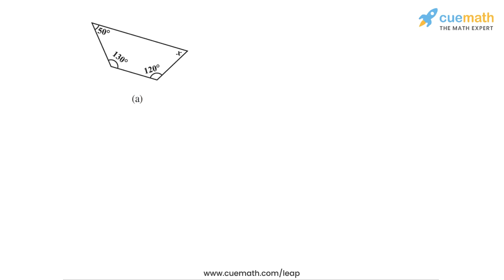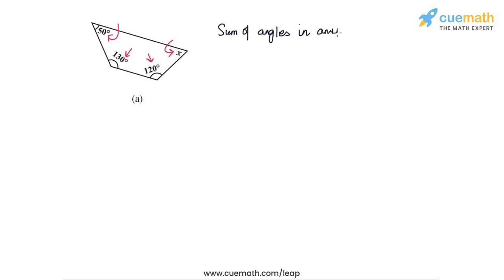Let's start with part a. In part a we have a quadrilateral in which three of the four angles are known: 50 degrees, 130 degrees, and 120 degrees, but we don't know the measure of angle x. What we can do is use the angle sum property of a quadrilateral. We have seen in a previous question in this exercise that the sum of the angles in any quadrilateral is equal to 360 degrees.